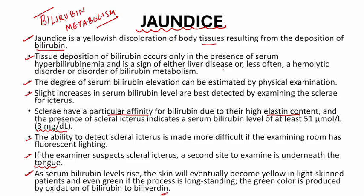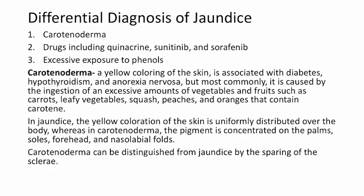Jaundice is caused by bilirubin, but sometimes the skin may be yellow without bilirubin elevation. One such condition is carotenoderma — a yellow coloring of the skin associated with diabetes, hypothyroidism, and anorexia nervosa, but most commonly caused by ingestion of excessive amounts of vegetables and fruits such as carrots, leafy vegetables, squash, peaches, and oranges that contain carotene. In jaundice the yellow coloration is uniformly distributed over the body, whereas in carotenoderma the pigment is concentrated on the palms, soles, forehead, and nasolabial folds.